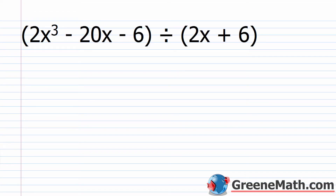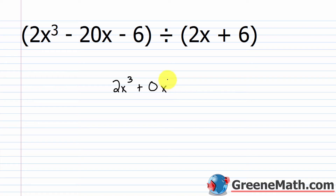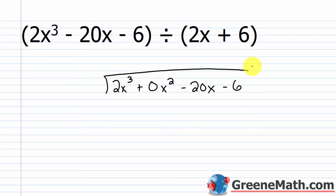So let's take a look at an example. This is not any more difficult than dividing with polynomials when you have all the terms — it's the same kind of setup. I have 2x cubed minus 20x minus 6 as my dividend, which goes underneath the house. So: 2x cubed, and I have minus 20x next — I'm missing that x squared term. So I'm going to put plus 0x squared as a placeholder, then minus 20x, and then minus 6. My divisor is 2x plus 6 out here.